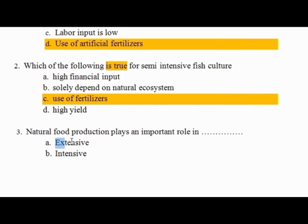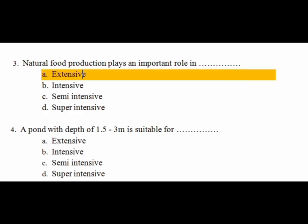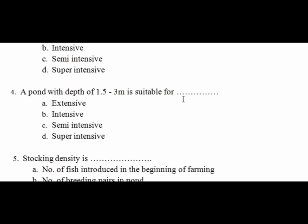Question 3: Natural food production plays an important role in which farming system? The answer is the traditional or extensive farming system, where natural food availability is the primary source of nutrition for fish.